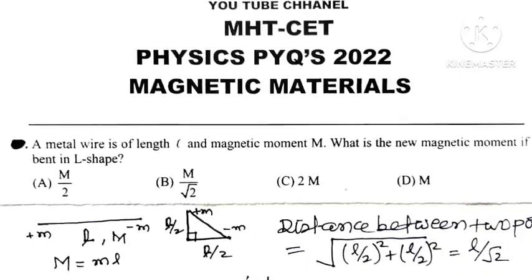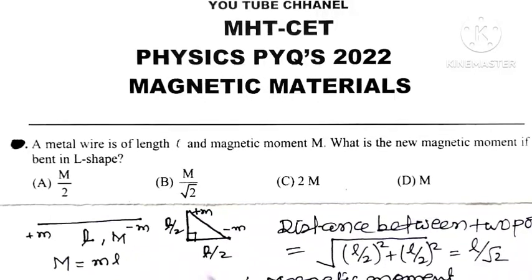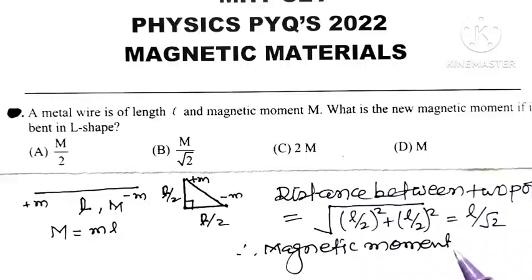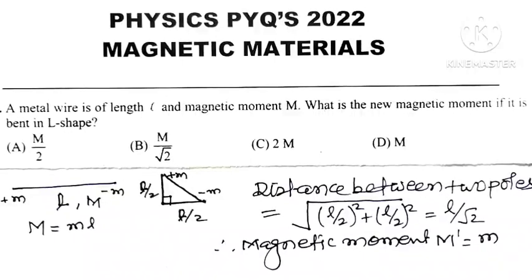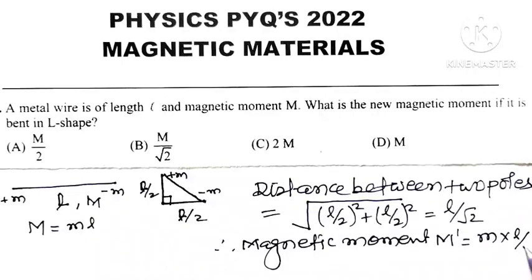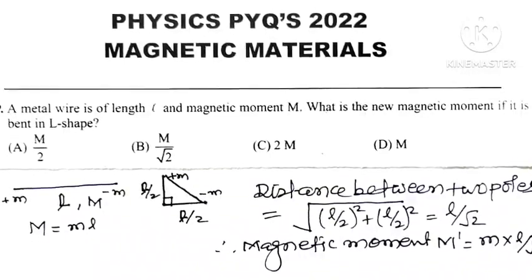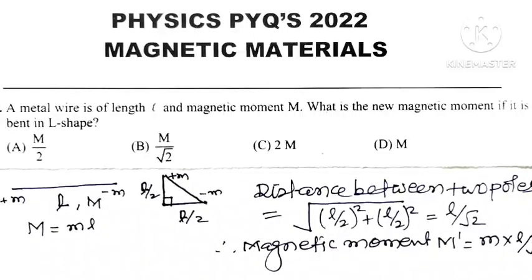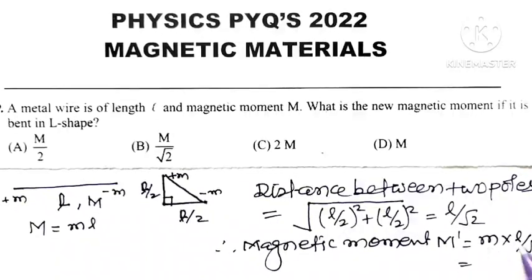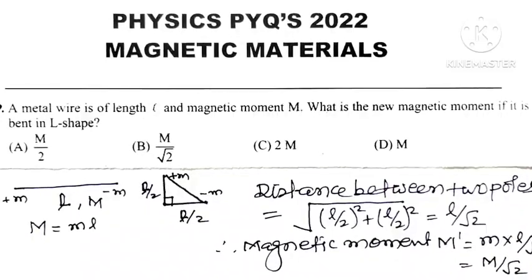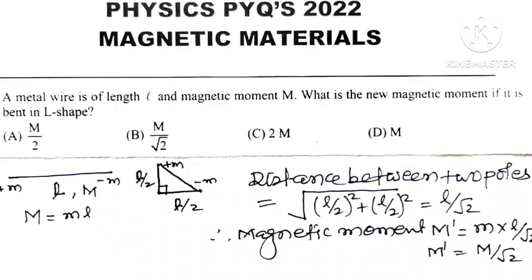Therefore, the new magnetic moment of that wire bent into L shape: M dash is equal to the magnitude of pole strength M multiplied by the distance between the two poles, which is L divided by root 2. Since M into L equals M, this gives M dash equal to M divided by root 2.